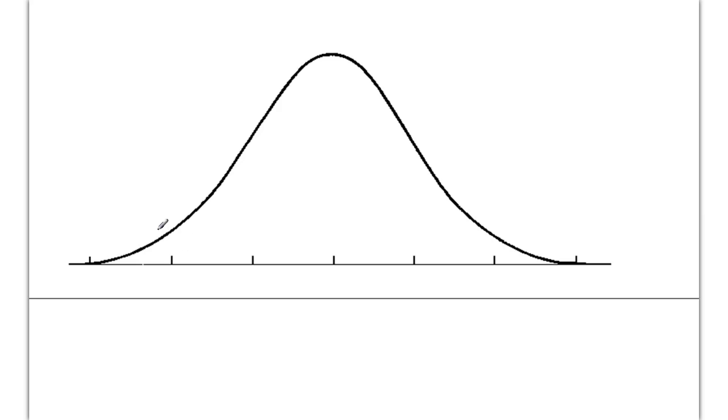we can actually predict with very good mathematical certainty where the middle 90% of the data is in the normal curve, or the middle 95% or 99%, whatever it is that we're looking for.